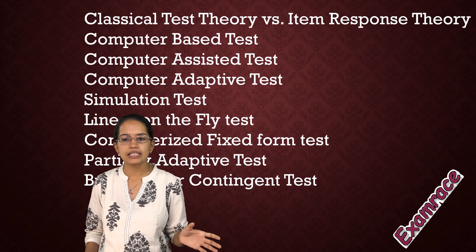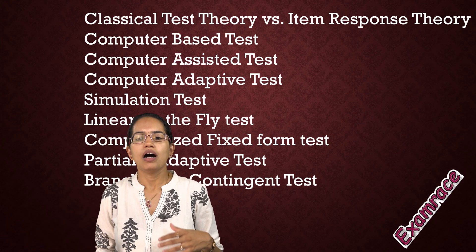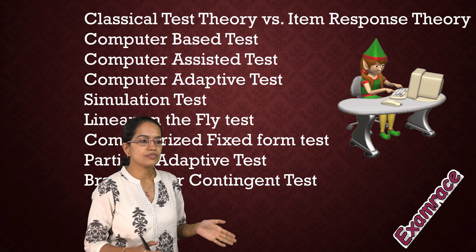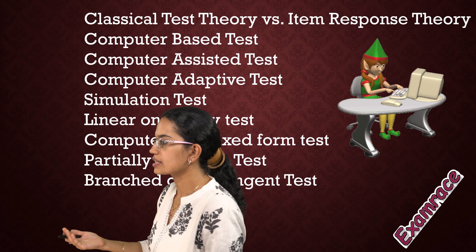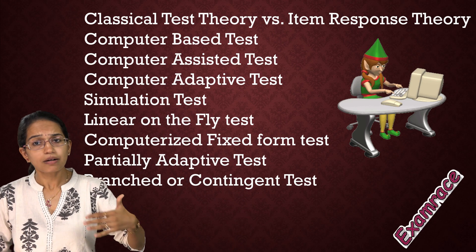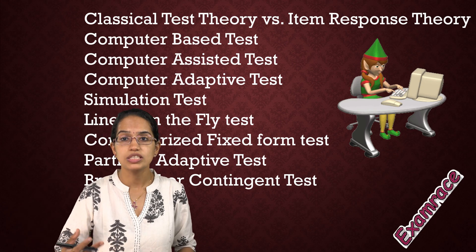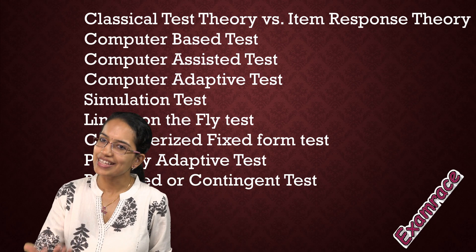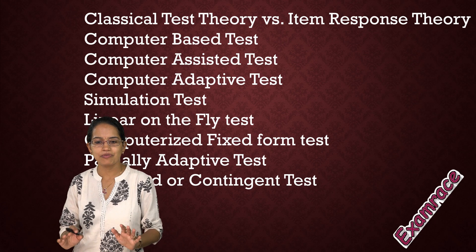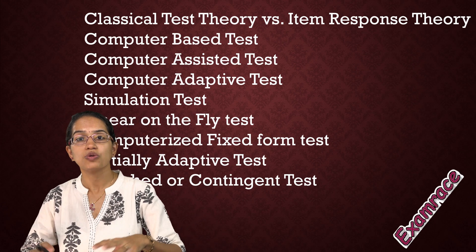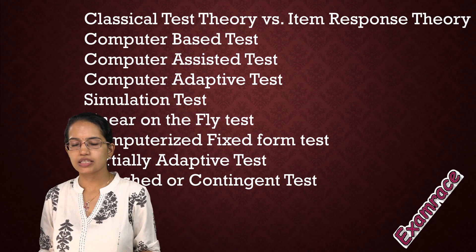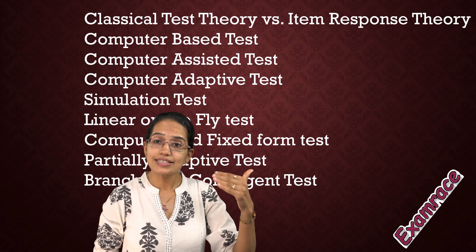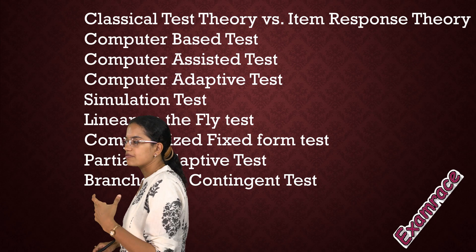Another important theory is classical test theory versus item response theory. We also talk about computer-based test, computer-assisted test, and computer-adaptive test. A computer-based test is simply a paper-and-pen test replicated on a computer. Computer-adaptive means the computer is intelligent enough — if you answer one question wrong, it gives you an easier next question; if you answer correctly, it gives a harder one. Similarly, you have partially-adaptive tests and branch tests, where a first-level response is taken and further sub-responses are classified.